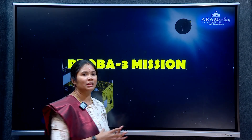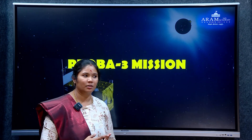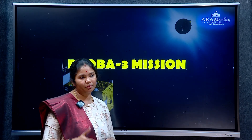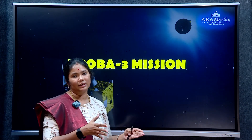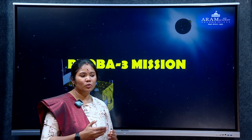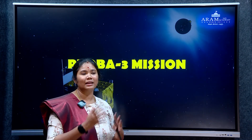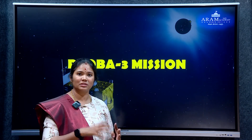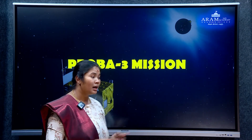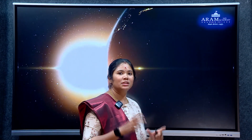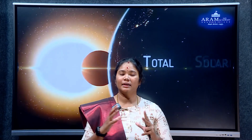This is the Proba 3 mission. Aditya L1 and Parker Solar Probe are comparable missions. But in Proba 3, the concept is different — it will create an artificial solar eclipse in space.